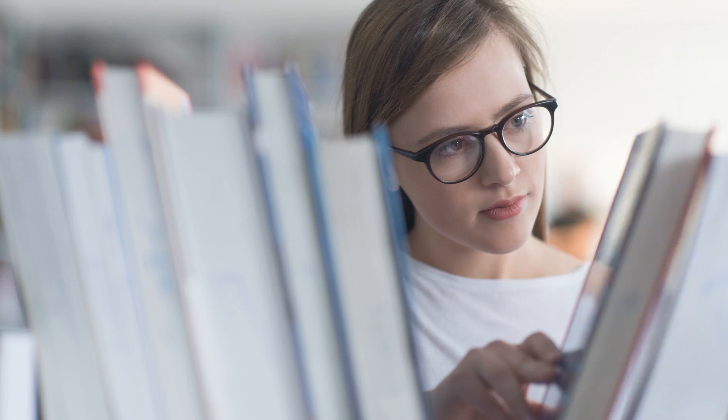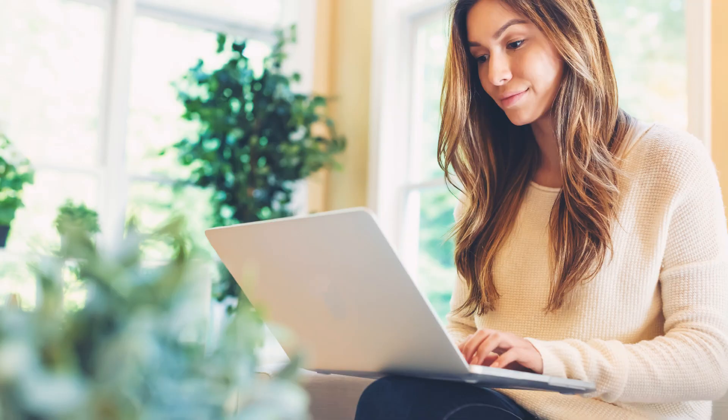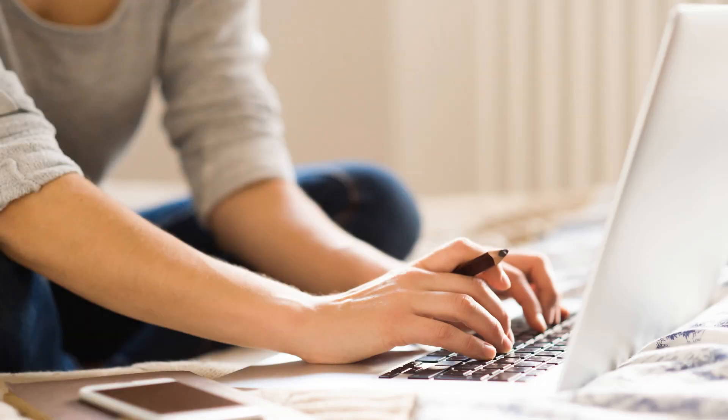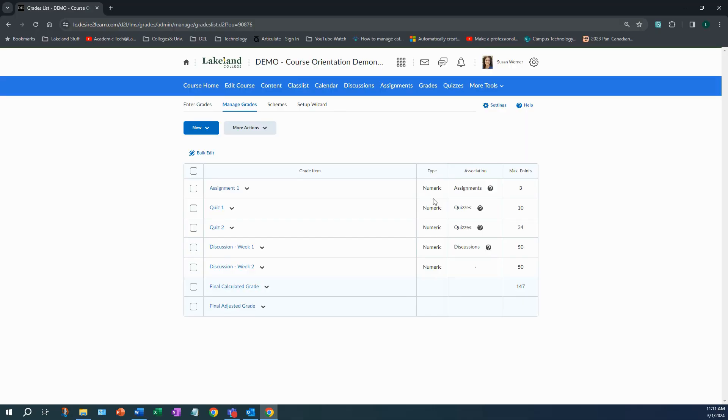Welcome back. In this video I will explain using an exemption for a student in your course. For specific reasons you may require a student not to have a grade submitted. While using a zero or a blank grade could just mean the student hasn't submitted, when you're using an exemption this means a student is not required to be scored. Let's go through and set up an exemption.